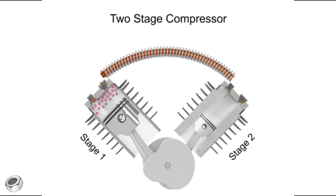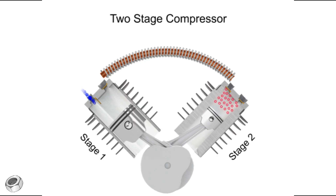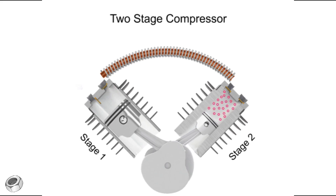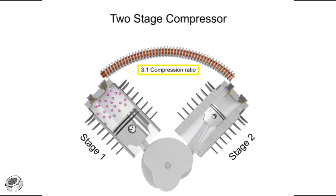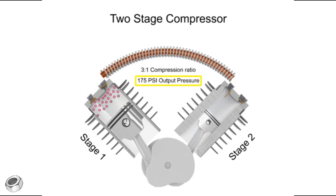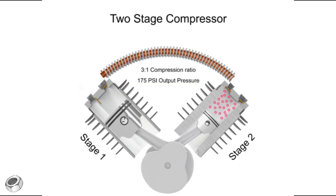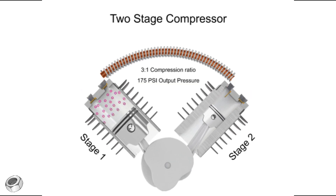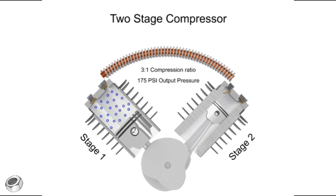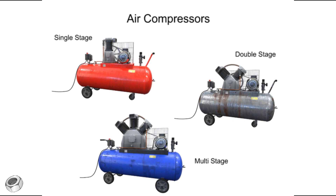The compressed air entering the second stage is sometimes called supercharged air. Two stage compressors have a compression range of 3 to 1 or even less per stage, but can operate up to 175 psi. They can also deliver more air at a higher pressure than single stage compressors of the same horsepower.